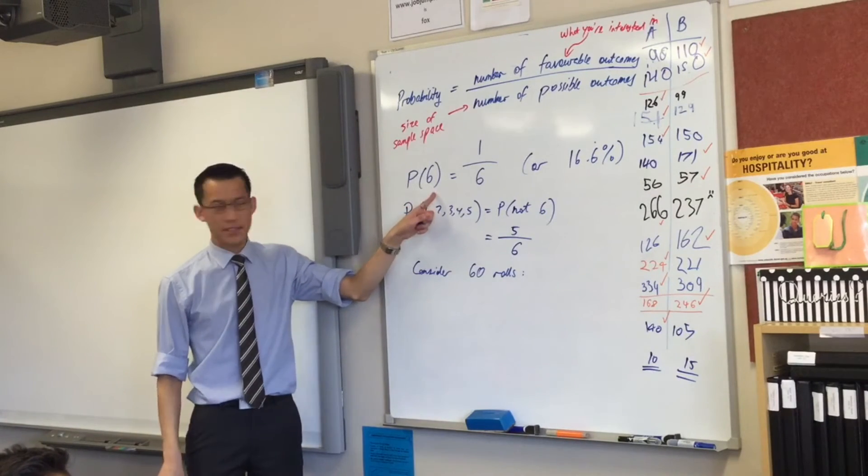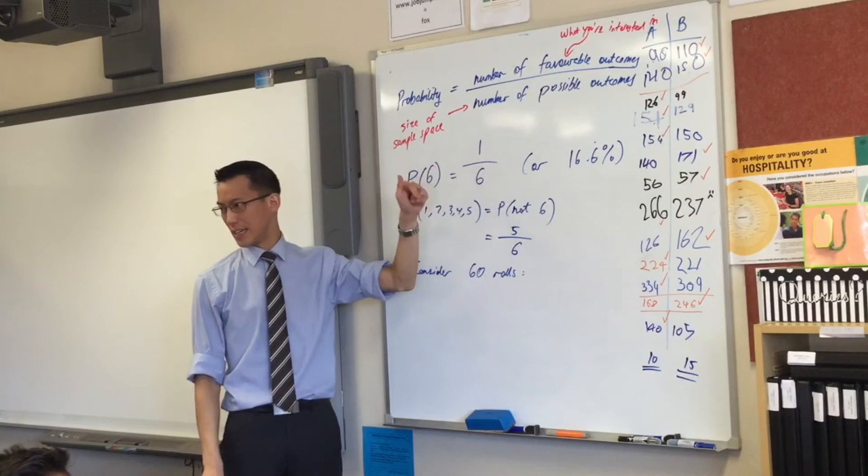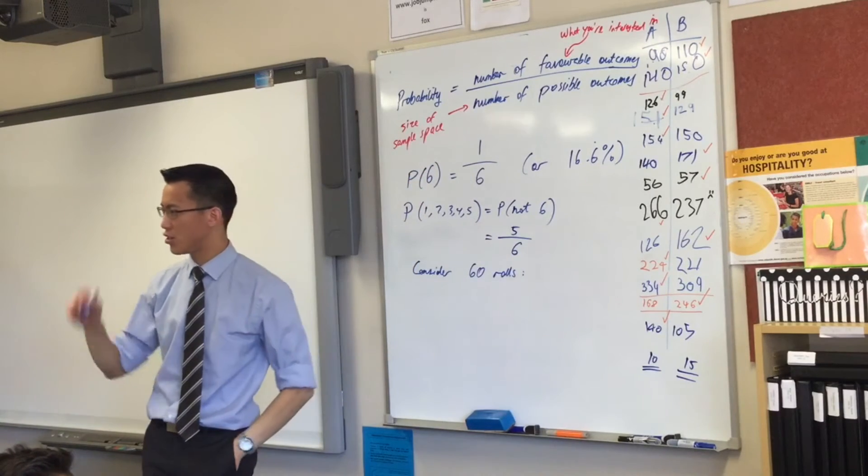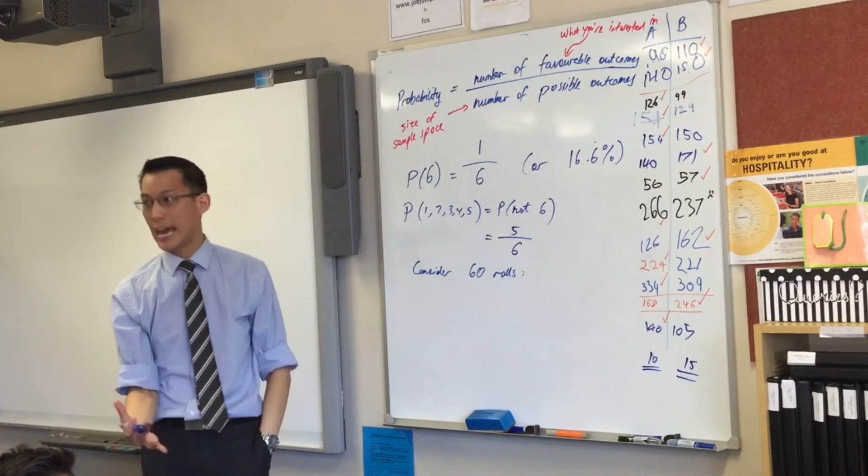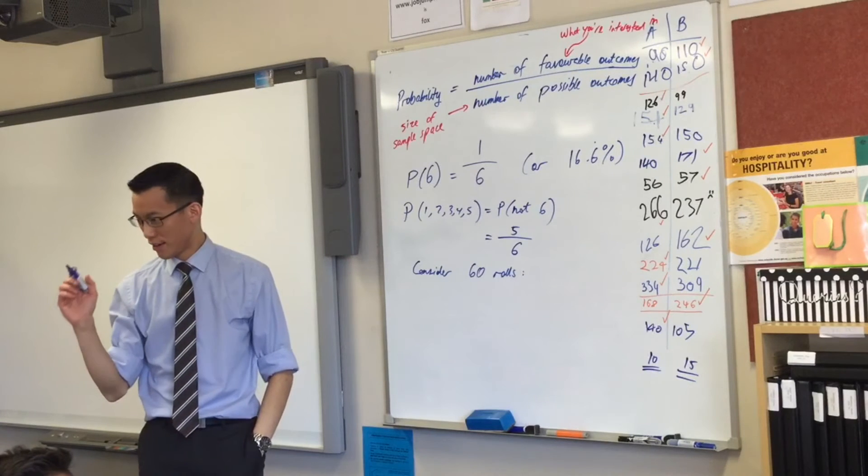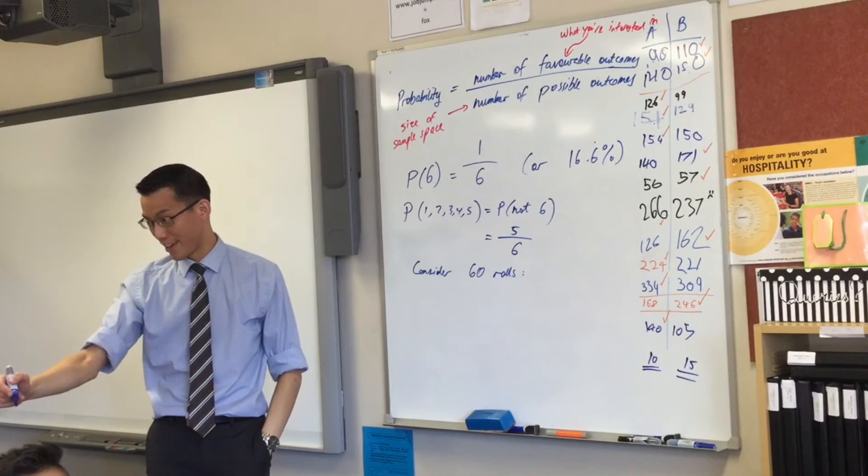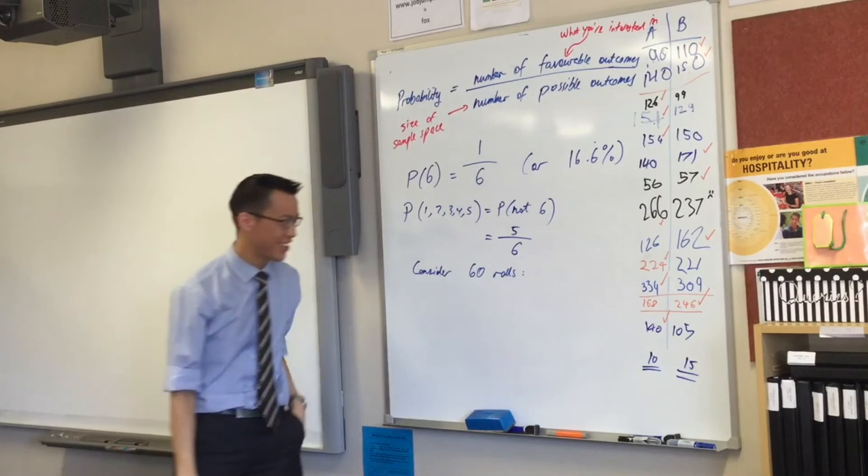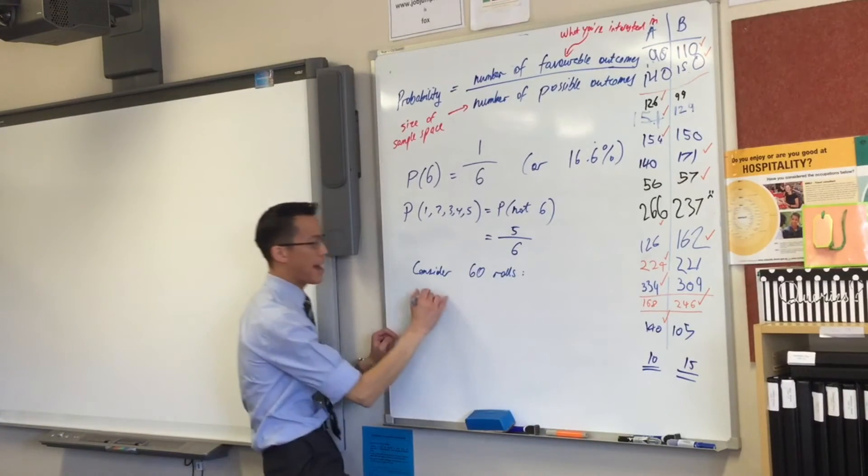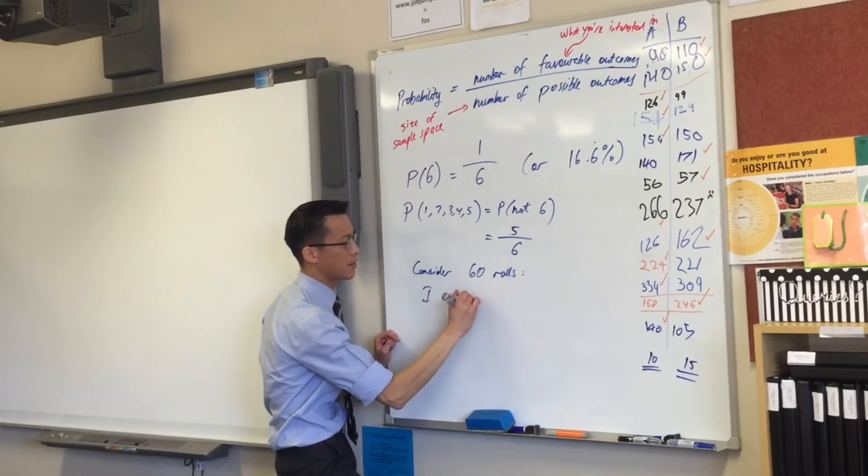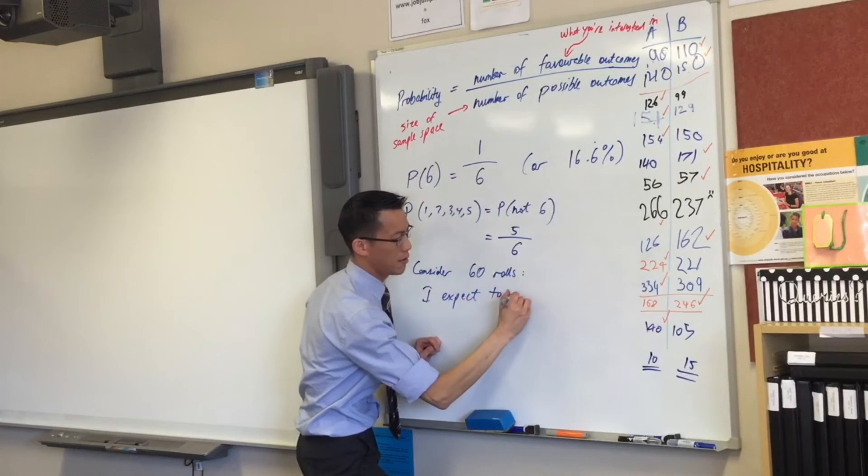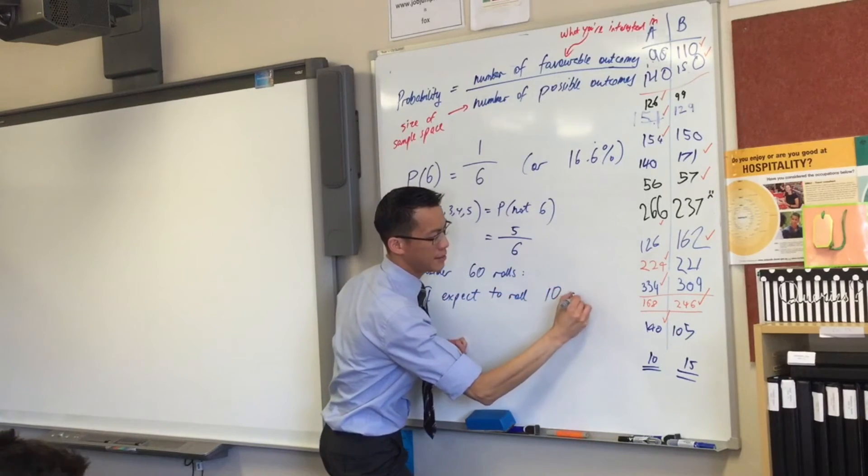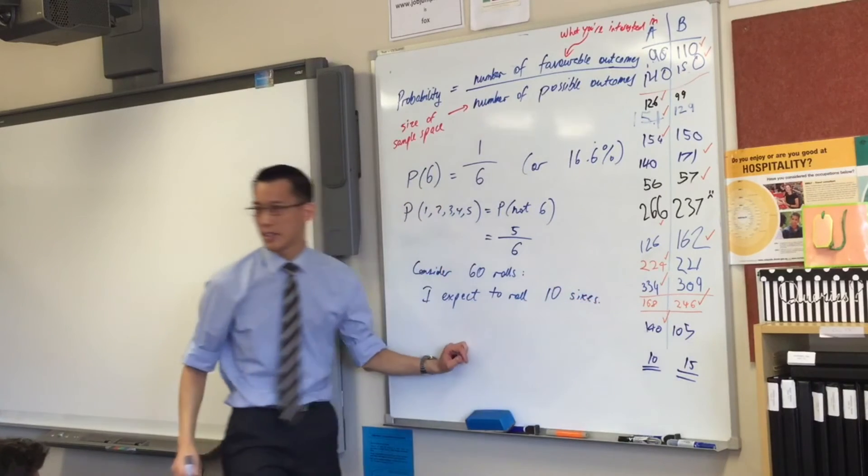So, imagine a game where you rolled exactly 60 times. If the probability of getting a six is one in every six, then how many sixes should you expect to get? How many would you expect? Thank you for raising your hand. Ten. Ten. Very good, okay. So, I expect, I predict, to roll ten sixes.